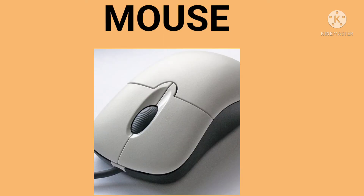The next is mouse. A mouse has two buttons on it. It is used to point, move, and select any item on the computer screen or monitor. A mouse also helps us to draw pictures and play games.